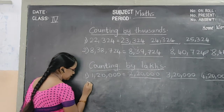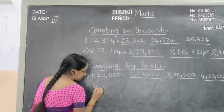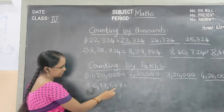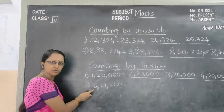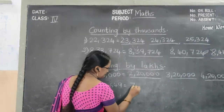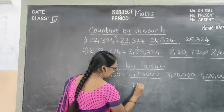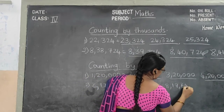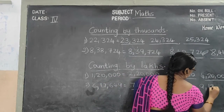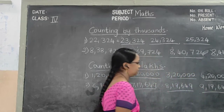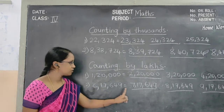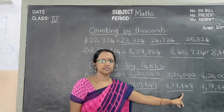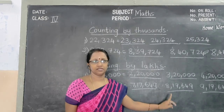Have you understood? Now the second one: 6,17,649. Here also 1's, 10's, 100's, 1000's, 10,000, lakhs. In the lakhs place the number is 6. After 6 comes 7 — so 7,17,649. After that 8,17,649. Then 9,17,649. Only in the lakhs place we have changed; the remaining full number — the 1000's, 100's, 10's, and 1's places — are the same. Only we have to change the number that is in the lakhs place. Next class we will take.